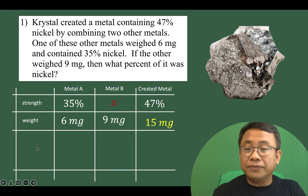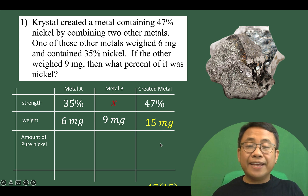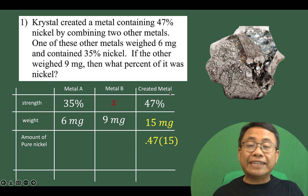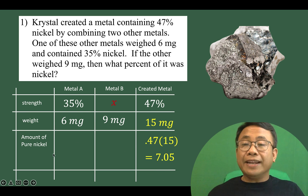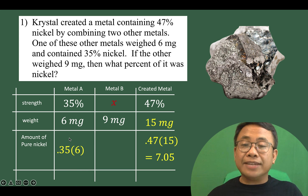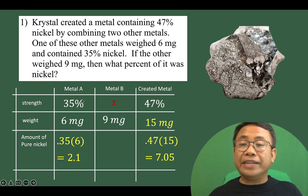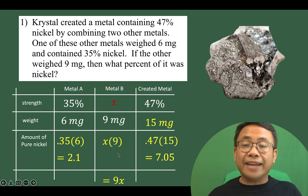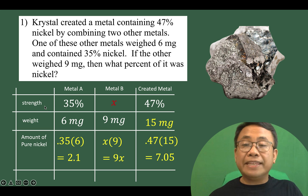Let's add another row for the amount of pure nickel. If 47% of the 15-milligram metal is pure nickel, then 0.47 times 15 represents the amount of nickel for the created metal, giving us 7.05. For metal A, multiply 0.35 times 6 to get 2.1 milligrams of pure nickel. For metal B, multiply x times 9 milligrams to get 9x, where x is a decimal number representing the percentage of nickel for metal B.